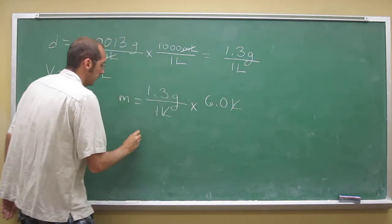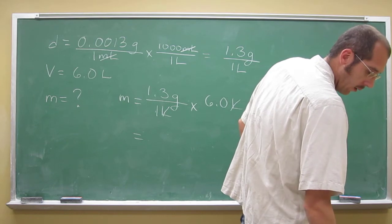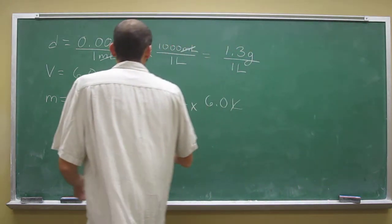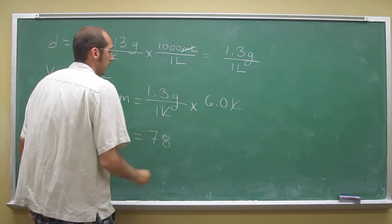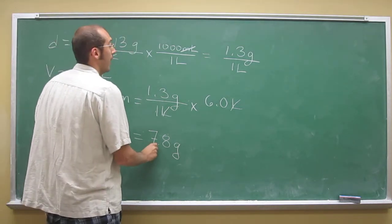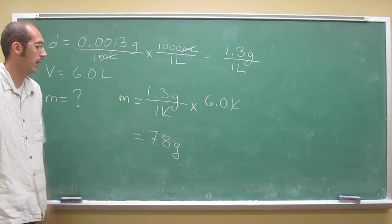And cancel, cancel, like that. And then you just do 1.3 times six, and that gives you 7.8 grams. So that's the mass of six liters of air, 7.8 grams.